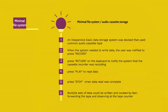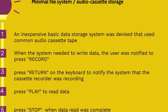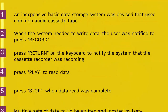Minimal file system or audio cassette storage: the late 1970s saw the development of the microcomputer. Disk and digital tape devices were too expensive for hobbyists, so an inexpensive basic data storage system was devised that used common audio cassette tapes. When the system needed to write data, the user was notified to press record on the cassette recorder and then press return on the keyboard. The system wrote a sound to provide time synchronization, then modulated sounds that encoded a prefix, the data, a checksum, and a suffix.